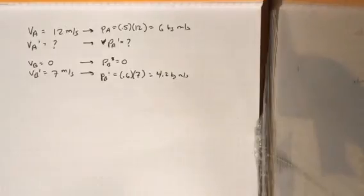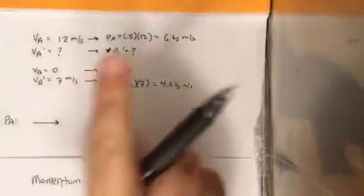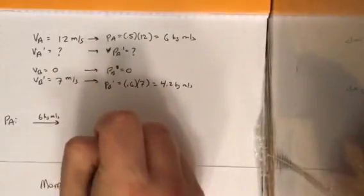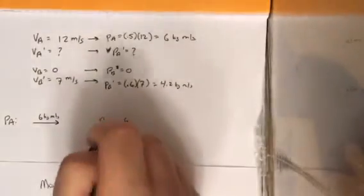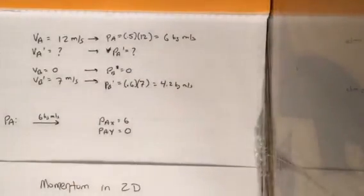Now, but in order to get into this, plugging into this equation, I've got to convert all these things into their X and Y components. So let's look at P A first. P A, we know from here, is going exactly this direction with a momentum of 6 kilogram meter per second. What does that mean? Well, remember, I'm going entirely in the X direction. So that means my P A X is going to be 6. I'm going to drop the units for simplicity's sake. And what's my P A Y then? Well, I'm not going up or down. So it's 0.